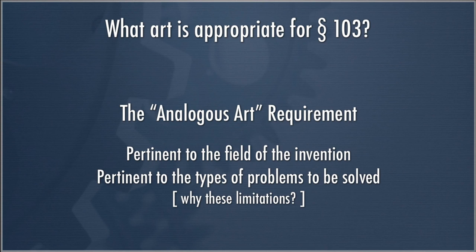So it's either in relevant or related fields — which can be described fairly broadly — or relevant to the types of problems to be solved. Why has the Federal Circuit imposed this? It goes back to the concern about hindsight with respect to Section 103. In Section 103 you can combine references, and if you had the ability to just pull references off library shelves irrespective of whether they had any relationship, you could almost certainly find each element of an invention somewhere in the prior art.